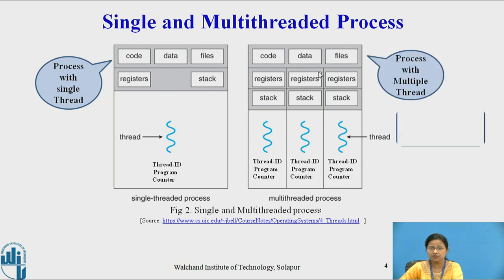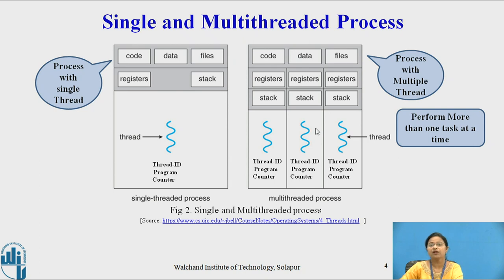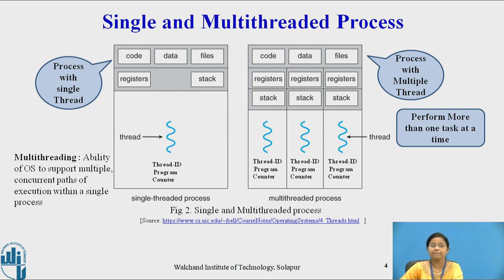A process with multiple threads is more capable than a single-threaded process because it can perform more than one task at a time. So the process with multiple threads is called multi-threading. Multi-threading is the ability of an operating system to support multiple concurrent paths of execution within a single process — meaning we have only one process, but that process is able to execute multiple tasks at a time.